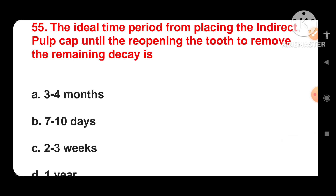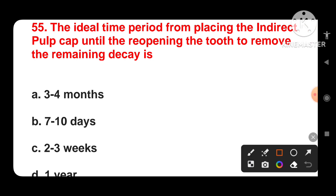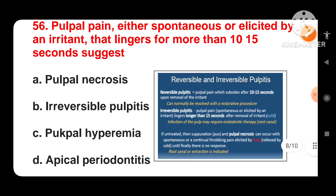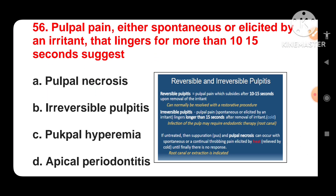Next question: the ideal time period from placing the indirect pulp cap until the reopening of the tooth to remove the remaining decay is — options are two to three weeks or one year. The answer is two to three weeks. The ideal time period from placing the indirect pulp cap until the reopening of the tooth to remove the remaining decay is two to three weeks.